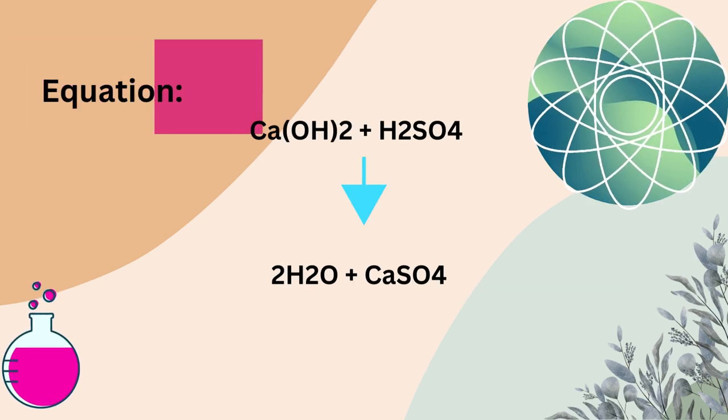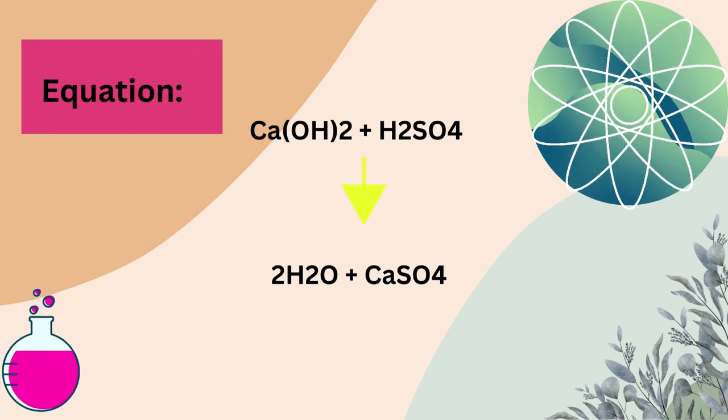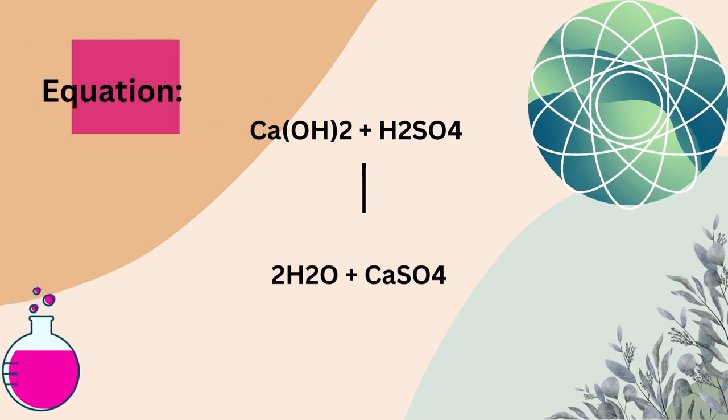Equation: Ca(OH)2 plus H2SO4 react and produce 2H2O and CaSO4.